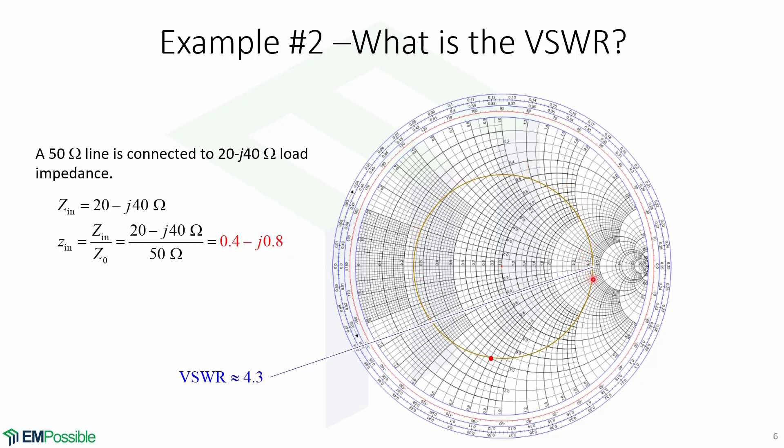And finally, we read the VSWR value at the right side of the intersection. As you can see, it is very easy to determine the VSWR using the Smith chart.